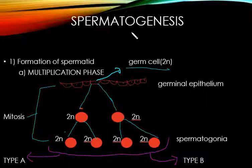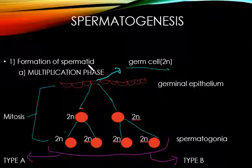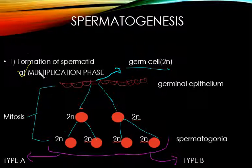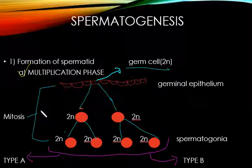Ab hum is process ko detail mein study karte hain, yani ki iske har ek step ko detail mein padhte hain. First step hoti hai formation of spermatid, jo teen phases mein hoti hai. Sabse pehla phase hota hai multiplication phase. Is phase mein, jaisa ki naam se hi pata chalta hai, multiplication hoti hai — aur yeh multiplication mitosis se hogi. Yeh humari germinal epithelial ki layer hai jismein germ cells — primordial cells — present hain, jinki ploidy 2N hai, yani yeh diploid cells hain.